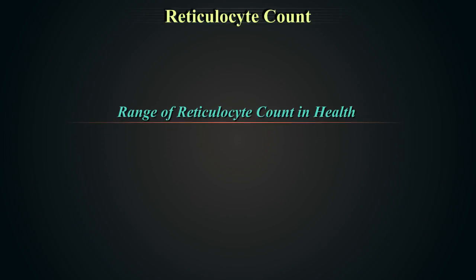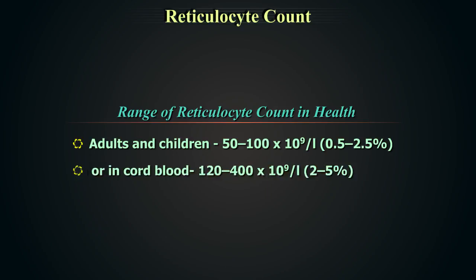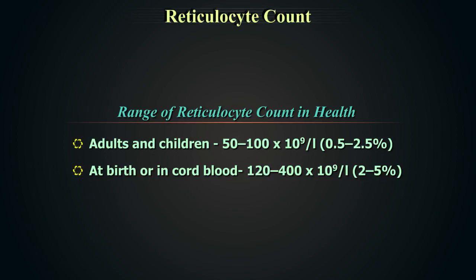The reference range of reticulocyte counts in healthy adults and children is 50,000 to 100,000 per litre, that is 0.5% to 2.5%. At birth or in cord blood it is 120,000 to 400,000 per litre, approximately 2% to 5%.